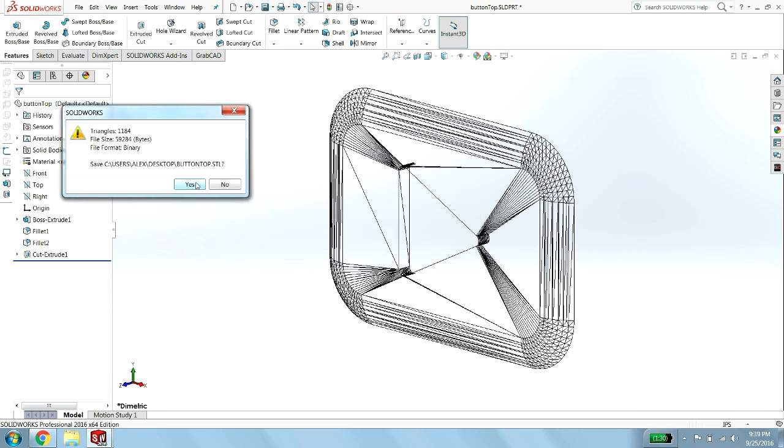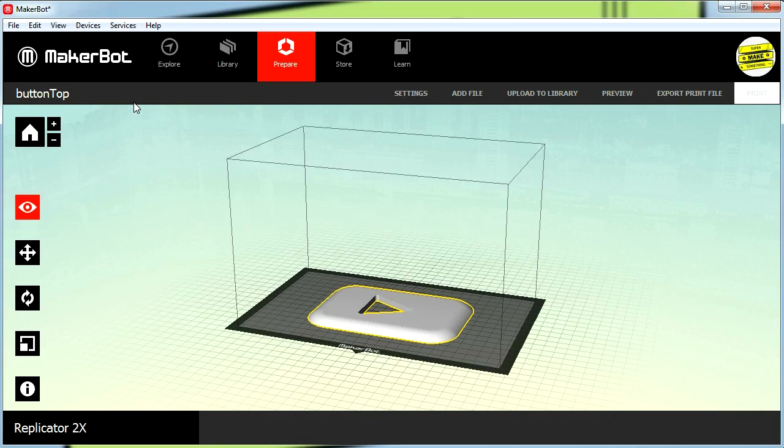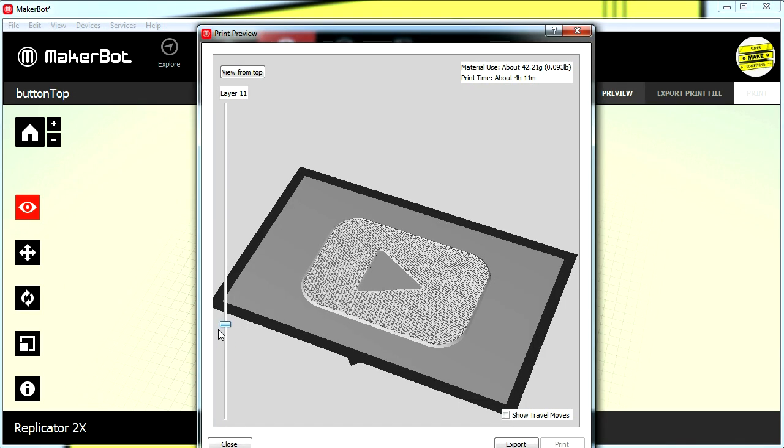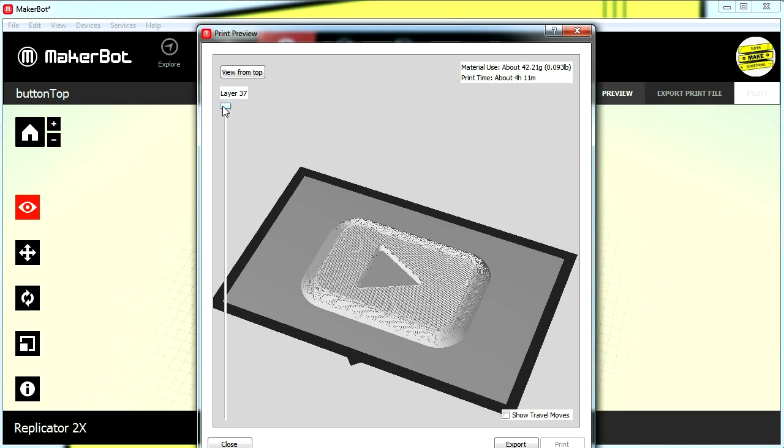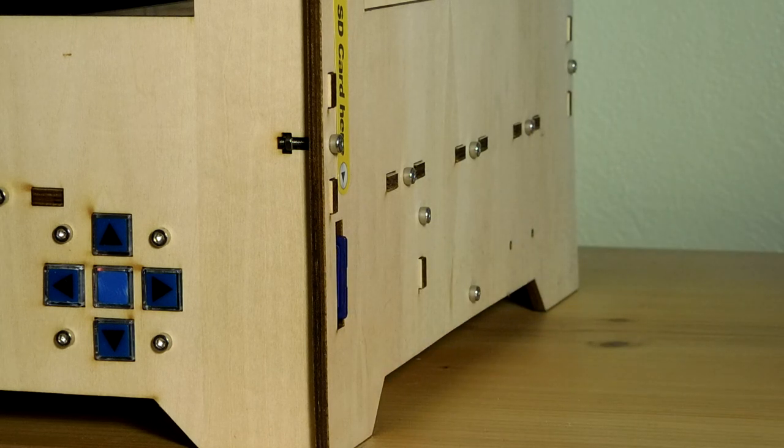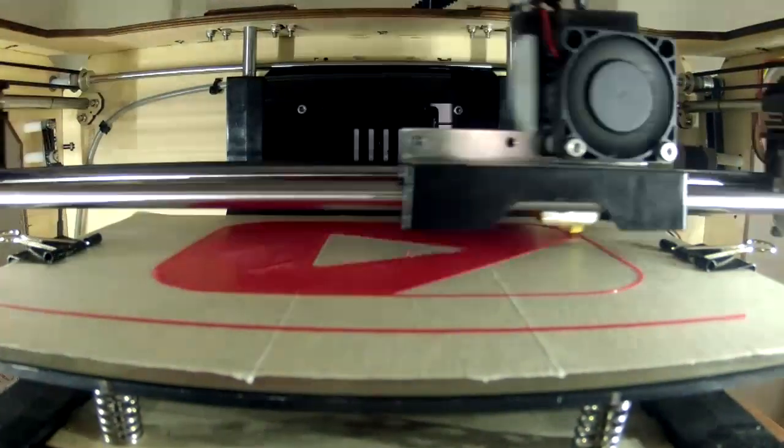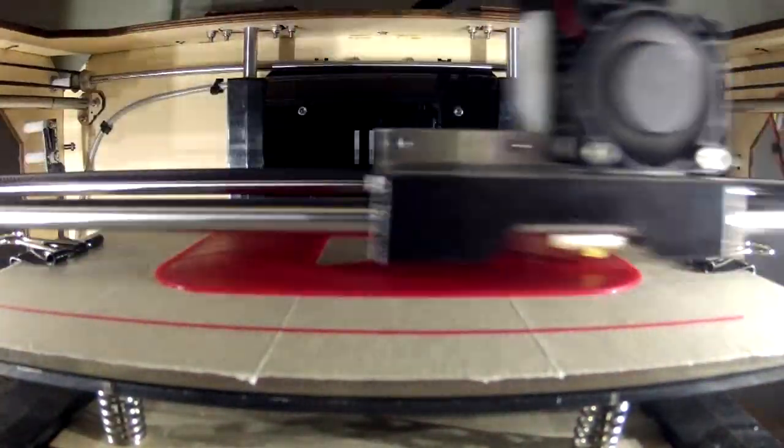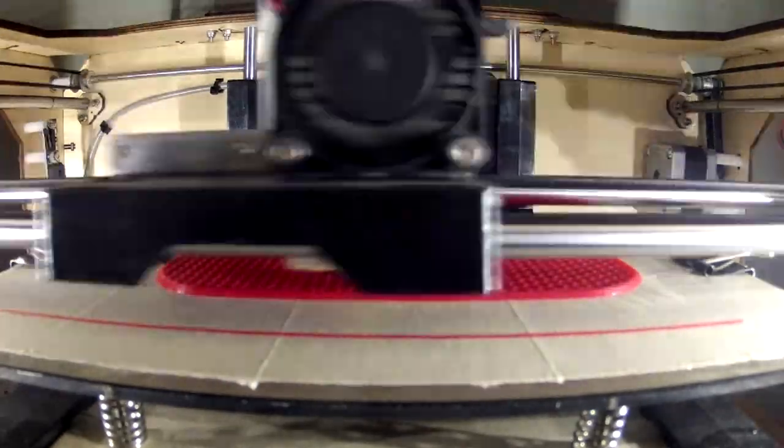I then imported each STL file into slicing software, which generated G-code to enable my 3D printer to fabricate both plates layer by layer, and transferred the resulting instructions to my 3D printer using an SD card. While the print process was relatively quick, with each piece printing in about three hours, their large size resulted in some slight curling around the edges of each plate.